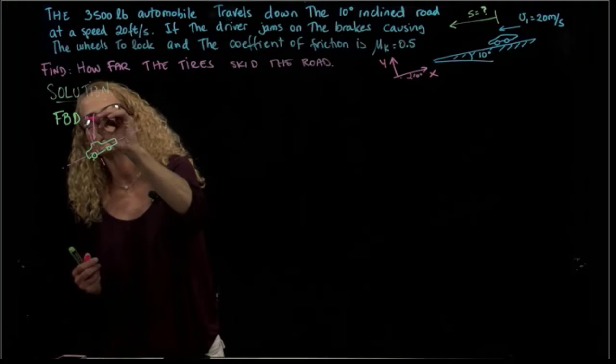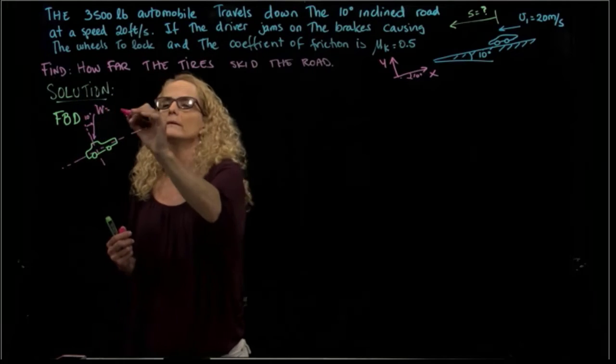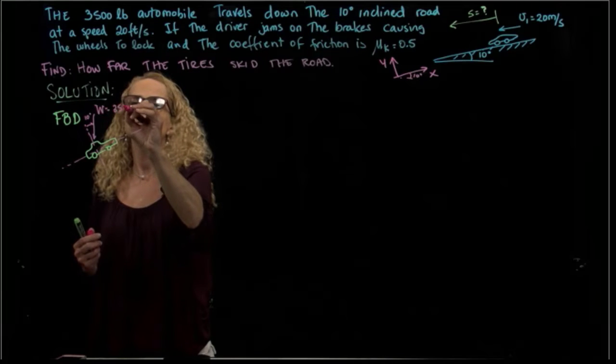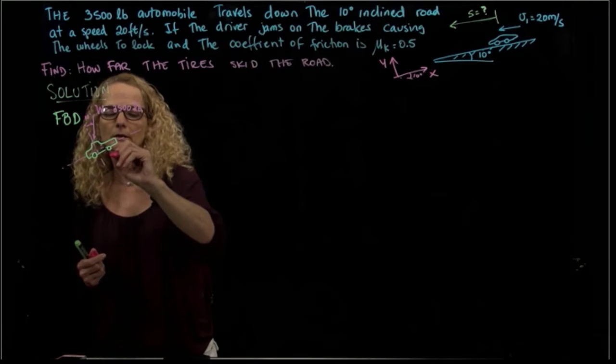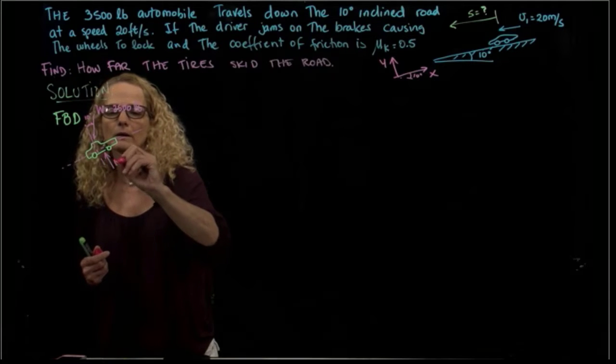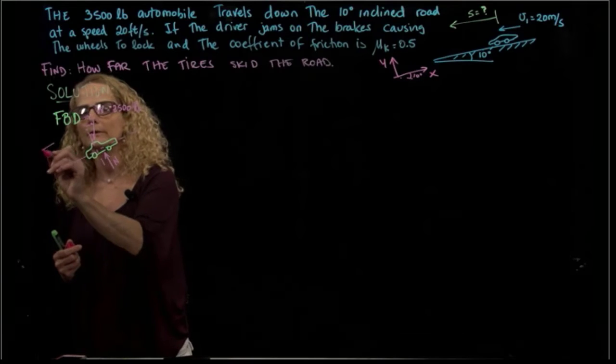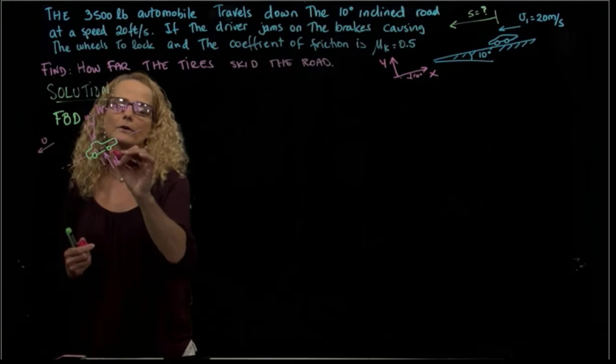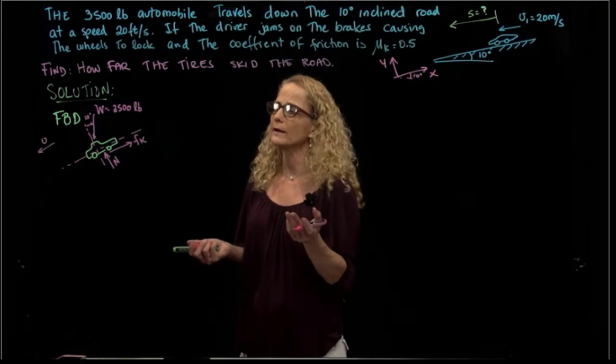So what forces do we have? We have our weight at 10 degrees. The weight will be 3,500 pounds. Then we have the normal, which could be anywhere in my car. And since my car is going in this direction, I have a force acting in that direction, that is the friction force.